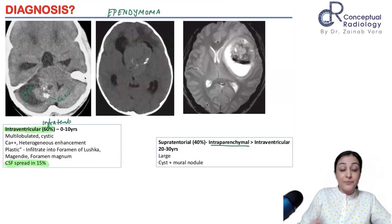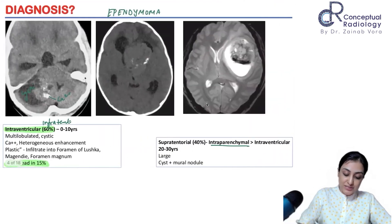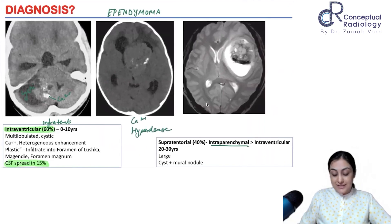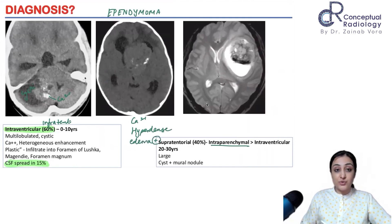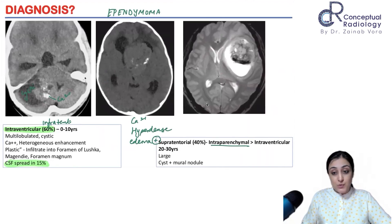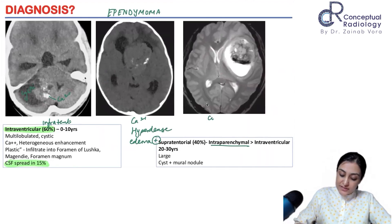This lesion is supratentorial, seen within the lateral ventricle near the foramen of Monroe going into the left horn. There is associated calcification, it is hyperdense compared to cortex, and there is associated edema showing invasion into adjacent parenchyma with peritumoral edema. When intraparenchymal, the frequent presentation is a cyst with a mural nodule — a very large heterogeneous lesion with associated calcification.